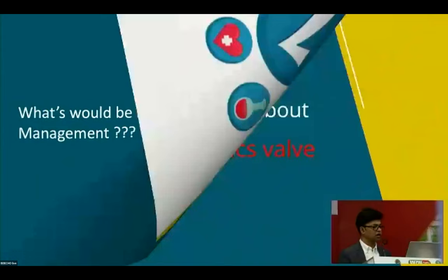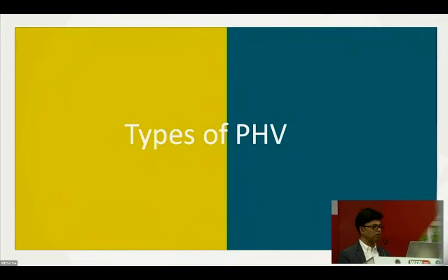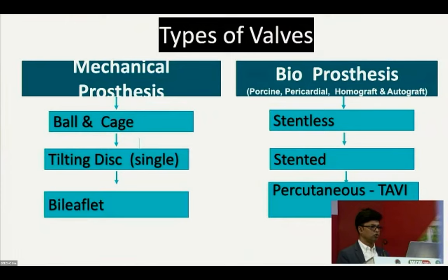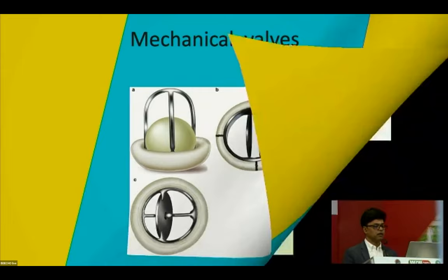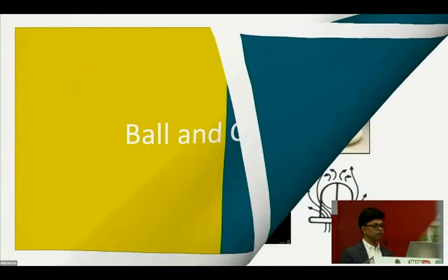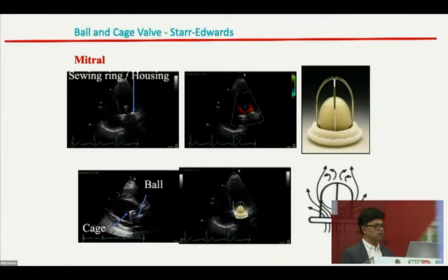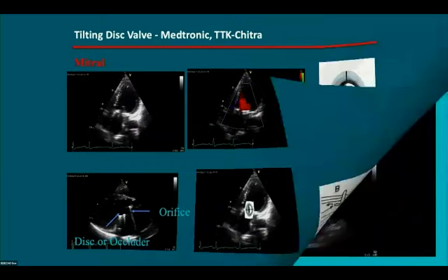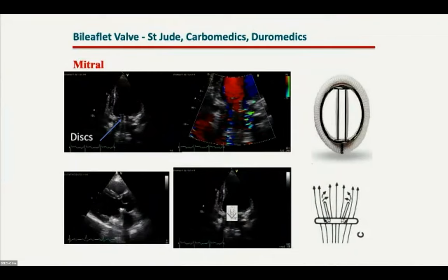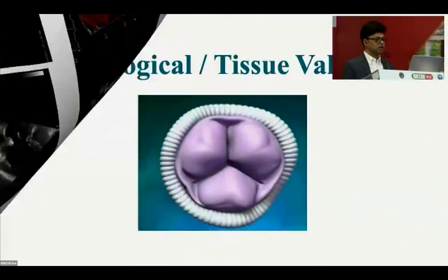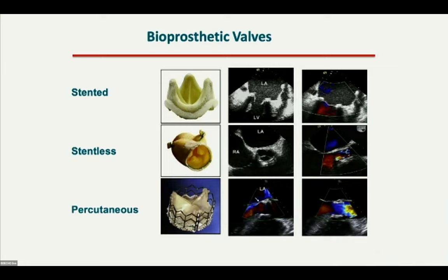Let us review prosthetic heart valves. There are two types: mechanical and bioprosthetic. Mechanical valves include the ball-and-cage (introduced 1952, first implanted by Dr. Charles Hufnagel), tilting disc (1969), and bileaflet valve. Bioprosthetic valves include stented, stentless, and percutaneous (TAVR). Structural examples shown include the bileaflet valve, ball-and-cage, tilting disc in mitral and aortic positions, and biological tissue valves both conventional and TAVR.